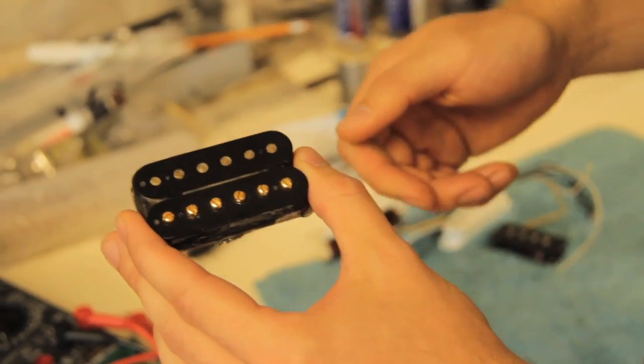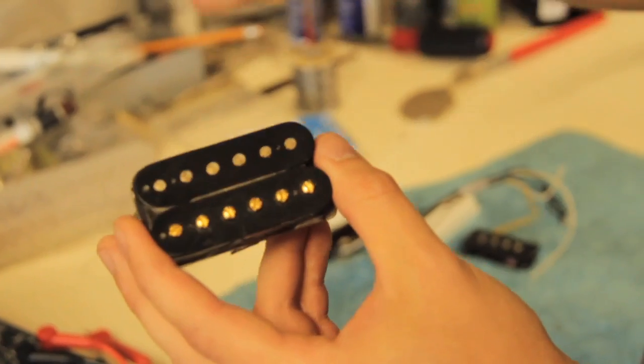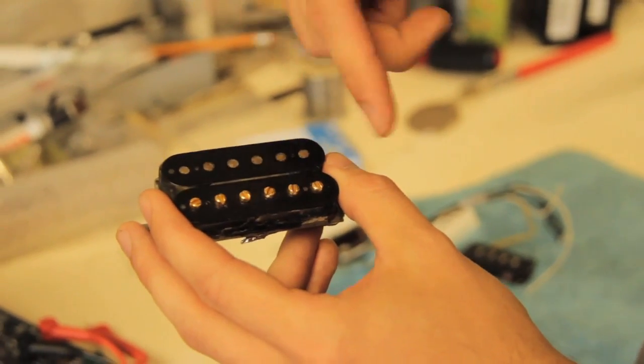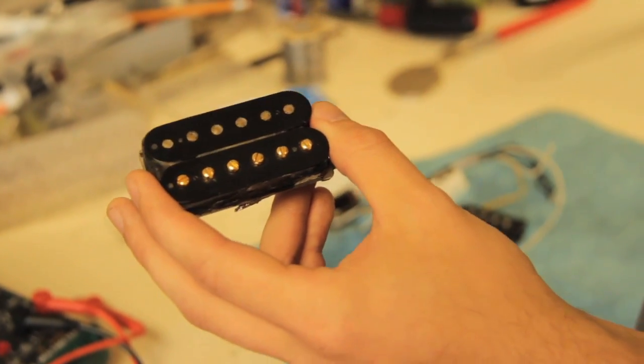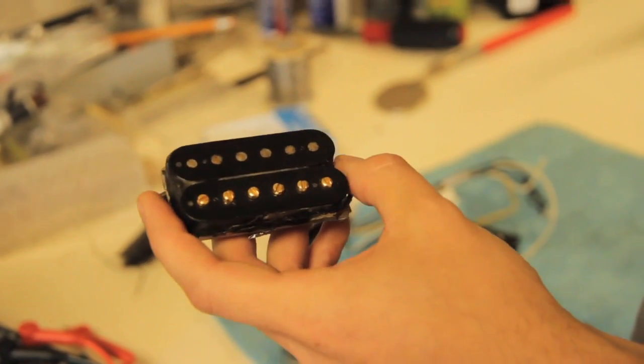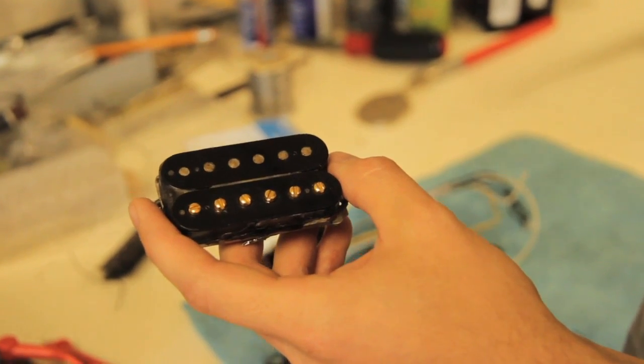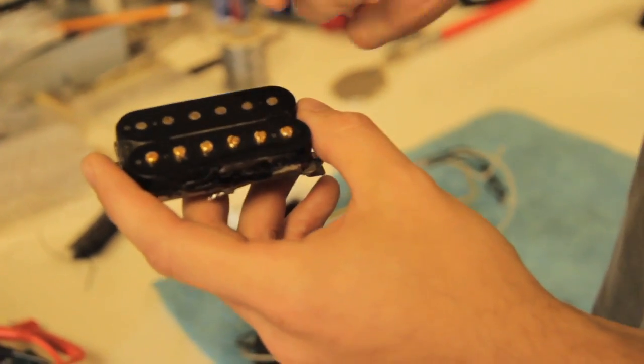Coil tapping is winding the pickup to a certain output and throwing out a lead, and then finishing to wind the pickup for its full output. That way, it's still humbucking, but because you have less winds working, it has the output similar to a single coil. This can only be done at the factory.